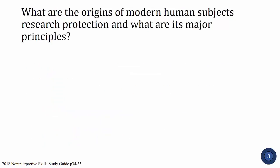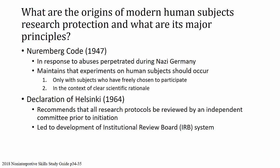What are the origins of modern human subjects research protection and its major principles? Human subjects research protection came out of the Nuremberg Code, post-World War II, in response to abuses perpetrated during Nazi Germany. It maintains that experiments on human subjects should occur only with subjects who have freely chosen to participate and in the context of clear scientific rationale. This was further refined in the Declaration of Helsinki in 1964, which recommended all research protocols be reviewed by an independent committee prior to initiation, leading to development of the Institutional Review Board, or IRB, system.